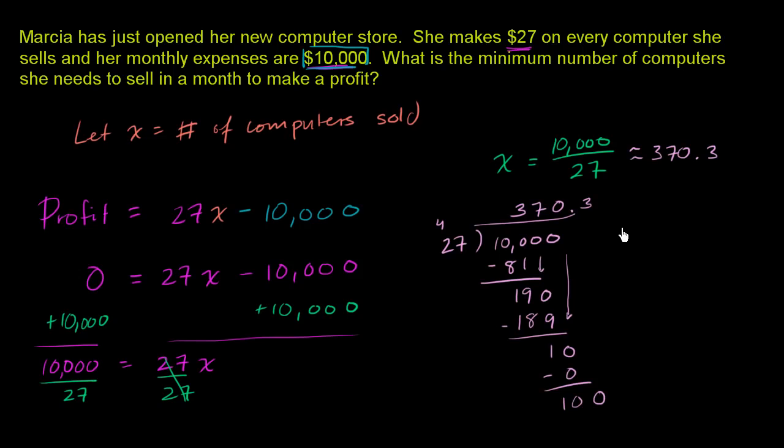But this is enough information for us to answer our question. What is the minimum number of computers she needs to sell in a month to make a profit? Well, she can't sell a decimal number of computers, a third of a computer. She could either sell 370 computers. If she sells 370 computers, then she's not going to get to break even because that's less than the quantity she needs for break even. So she needs to sell 371 computers in a month to make a profit.